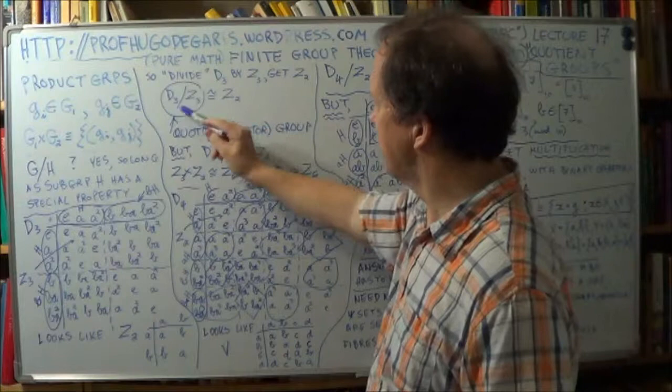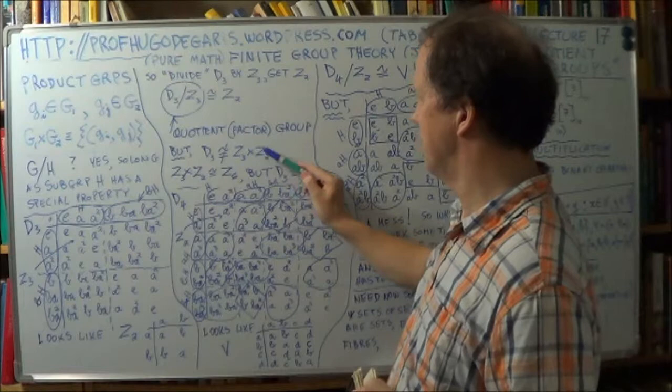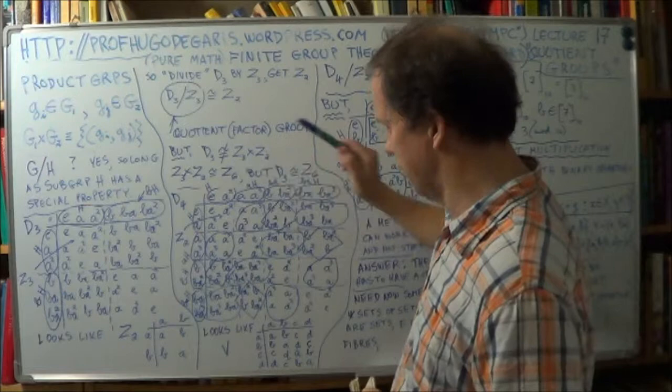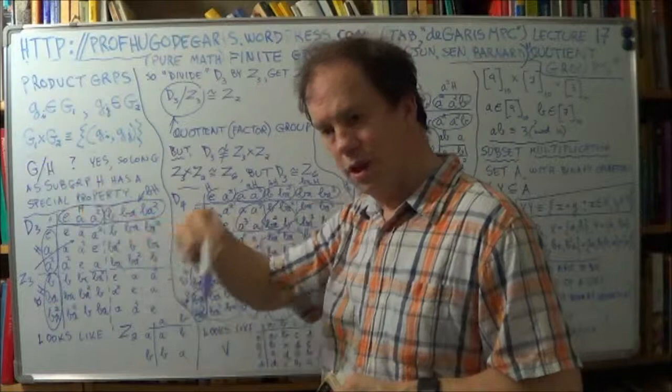All right? Now, if that's true, and it is, you cannot deduce that D3 is equal to Z3 times Z2. That doesn't necessarily follow. In this case, it does not follow. This is not isomorphic to that. In fact, Z3 times Z2, using this Cartesian product, and since we're talking about groups, a Cartesian product is then relabeled into, what's the word? Direct product, right?